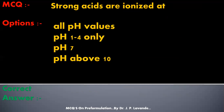Next question: strong acids are ionized at — options are: all pH values; pH 1 to 4 only; pH 7; or pH above 10. The correct answer is all pH values — strong acids are ionized at all pH values.